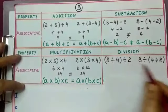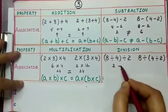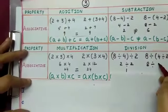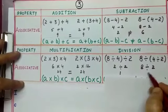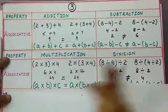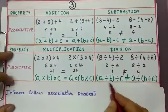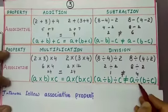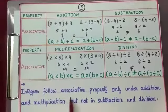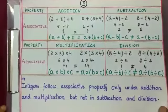Finally, checking associativity under division: (8 divided by 4) divided by 2 gives 2 divided by 2 equals 1; but 8 divided by (4 divided by 2) gives 8 divided by 2 equals 4. Since 1 is not equal to 4, integers are not associative under division. In general, (a divided by b) divided by c is not equal to a divided by (b divided by c). We conclude integers follow associative property only under addition and multiplication, but not under subtraction and division.